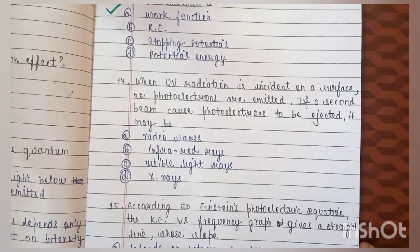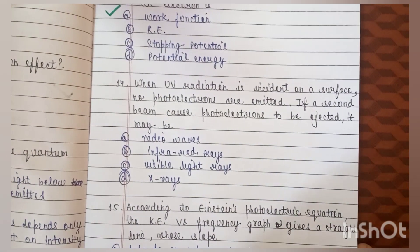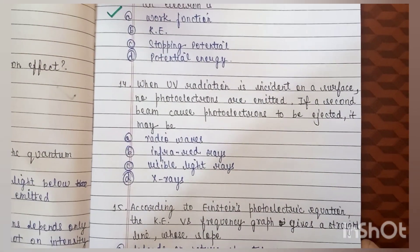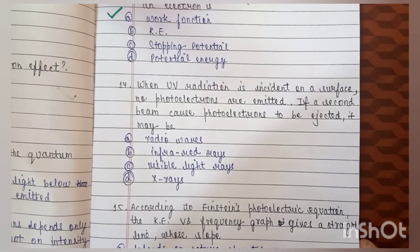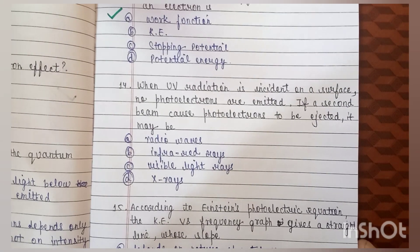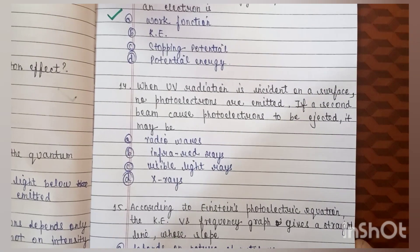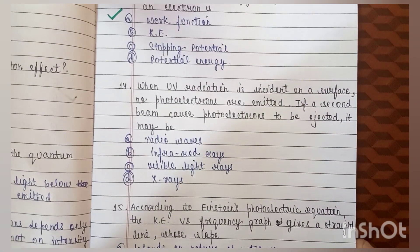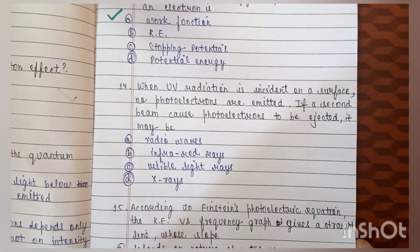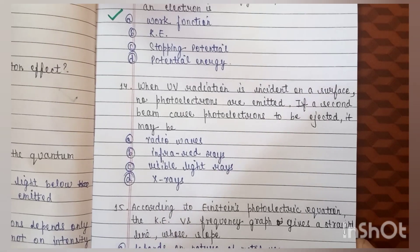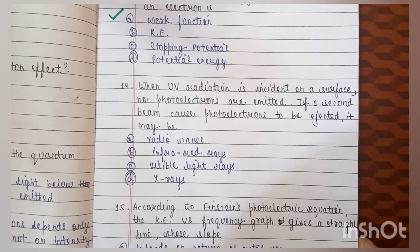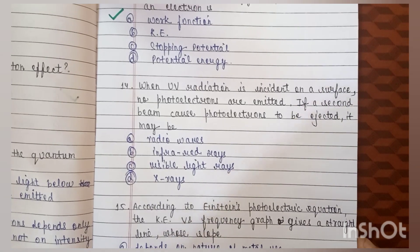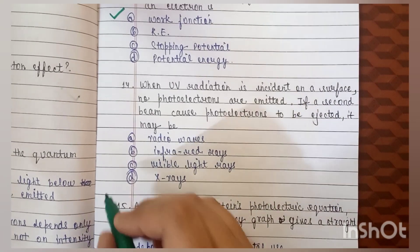Question number 14: when UV radiation is incident on a surface, no photoelectrons are emitted. If a second beam causes photoelectrons to be ejected, it may be — radio waves, infrared rays, visible light rays, or X-rays? The correct answer is D: X-rays.